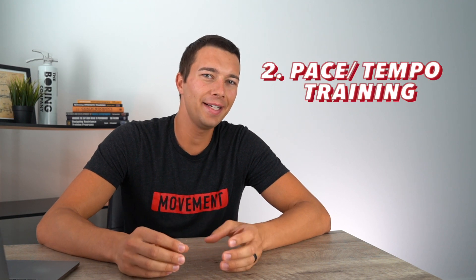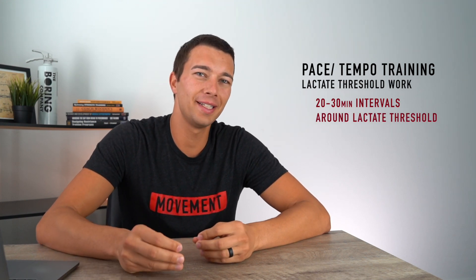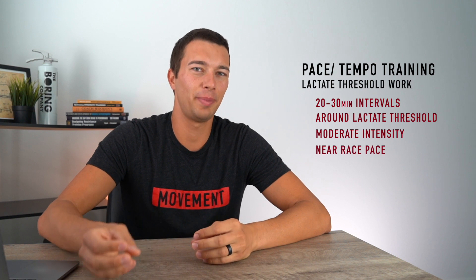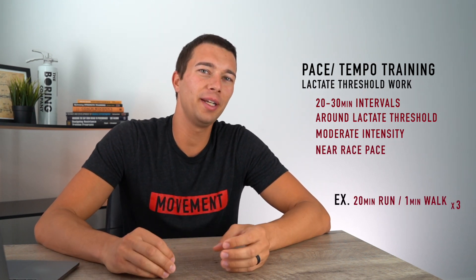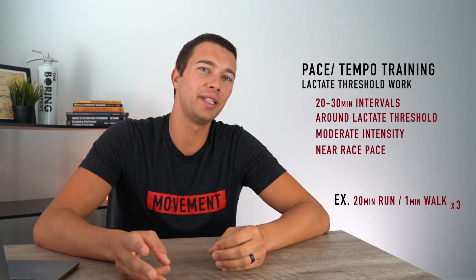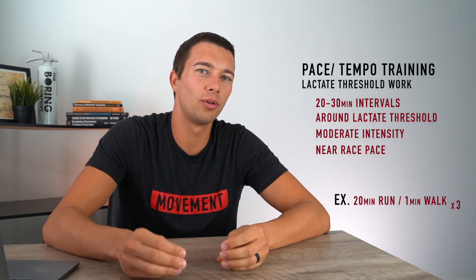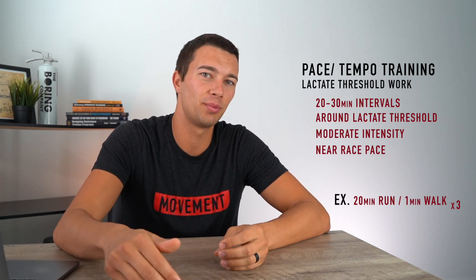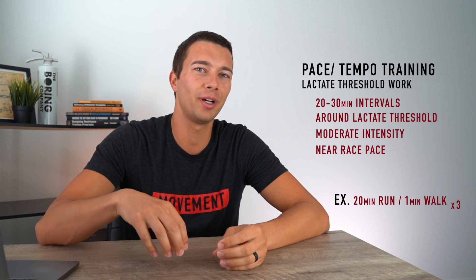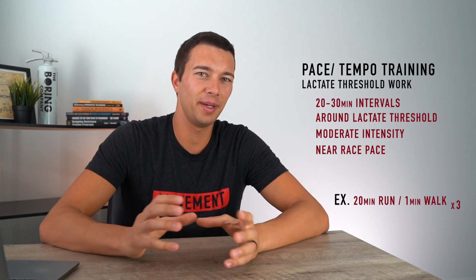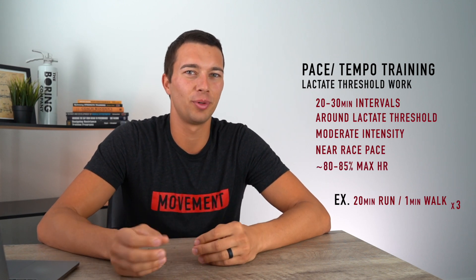Number two, a little more intense, is pace or tempo training. You may also hear this called lactate threshold work, because these are intervals lasting 20 to 30 minutes done right around the lactate threshold. These are considered moderate intensity and near race pace. For example, we might do a 20-minute run with a one-minute walk in between, three times — a 60-minute workout around race pace — at roughly 80 to 85% of max heart rate.